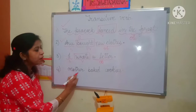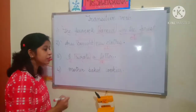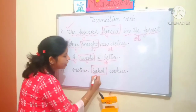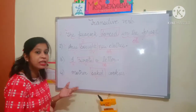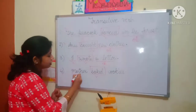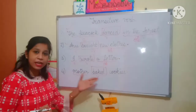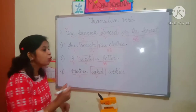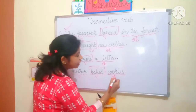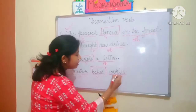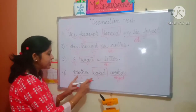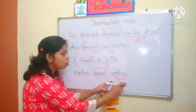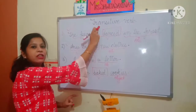Next example: mother baked cookies. Which is the action word, which is the verb? Baked. Ye toh humari verb ho gayi. And who is the subject? Mother. Is there any object in the sentence? Cookies — so cookies worked as object here. Iske paas subject bhi hai, object bhi hai. So a verb which has subject as well as object is the example of transitive verb.